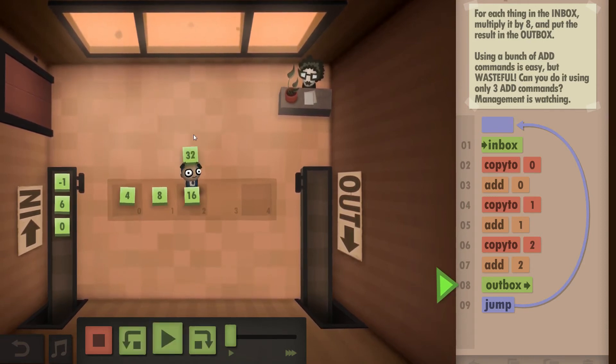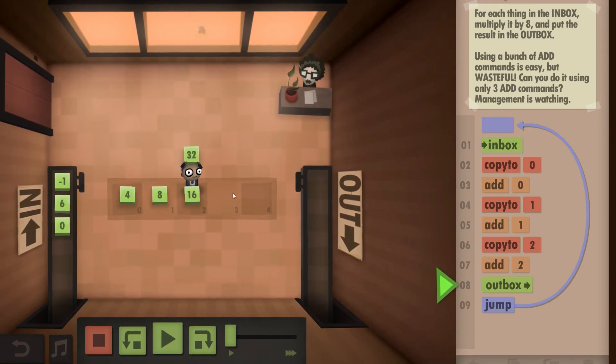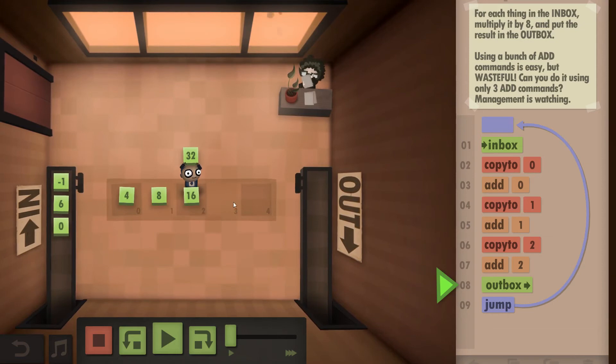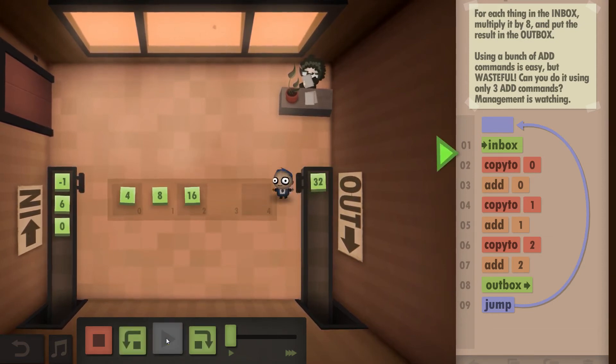Then adding it again, doubling this one again, so you get times 8, which you could copy into here. But since you already want to outbox it, you don't need to write it back. You can put it directly into the outbox, and then you repeat.